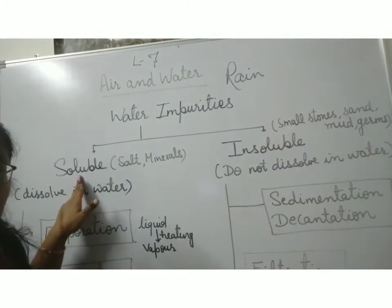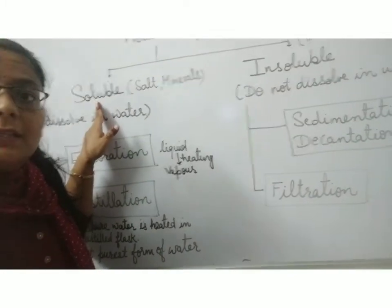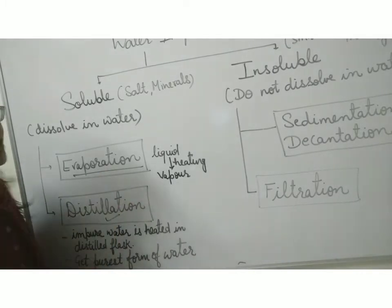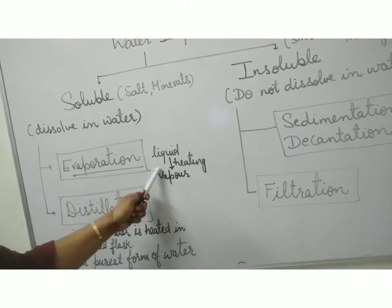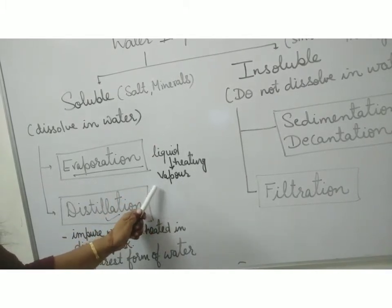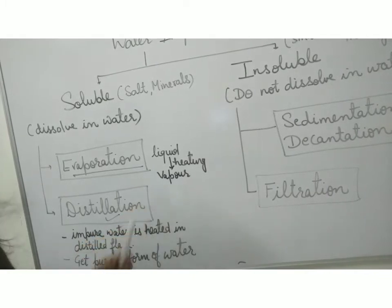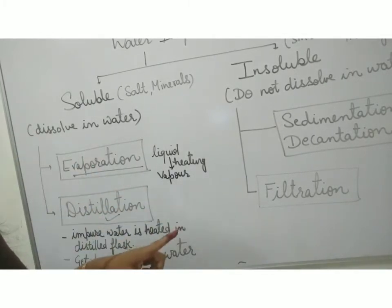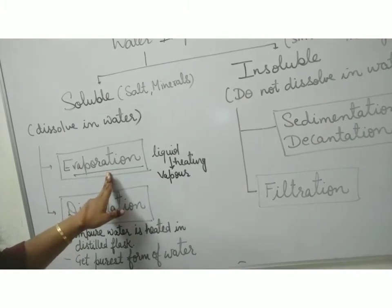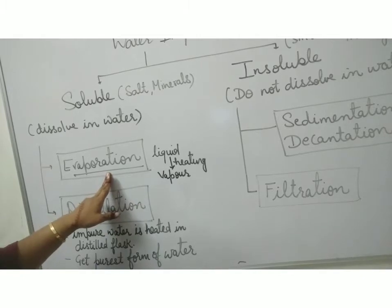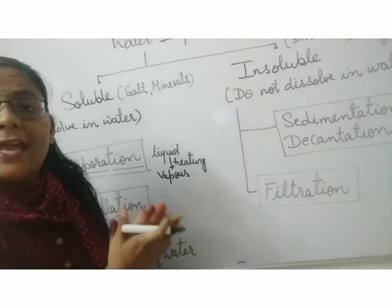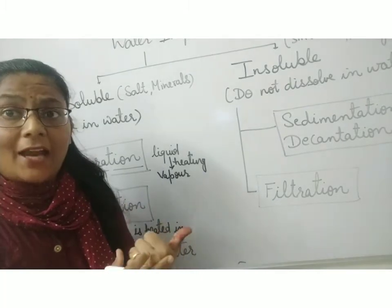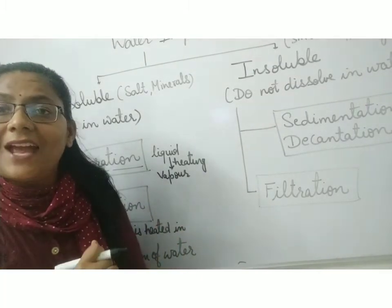In this module, I am going to explain about water impurities and how to purify water by different methods. Soluble impurities can be removed by these methods: evaporation and distillation. What is evaporation? When a liquid is heated, it converts into vapor. When it converts into vapor, we get its purest form. The method of changing a liquid into vapor by heating is called evaporation. When the whole liquid is vaporized, the soluble impurities are left behind.